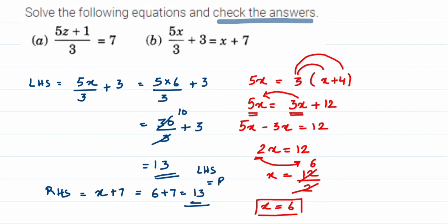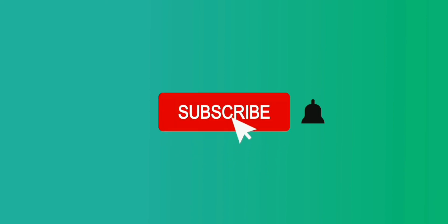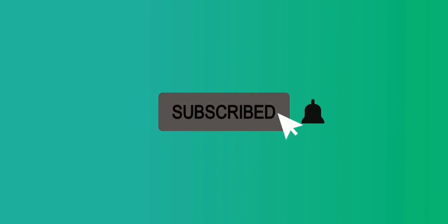Since LHS and RHS are both 13, LHS = RHS, which means x = 6 is the correct answer. This is how we can solve and check the answer. I hope it's clear — if you have a question or doubt, you can drop a comment below. Thank you so much for watching.